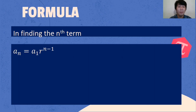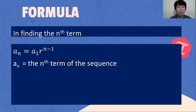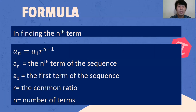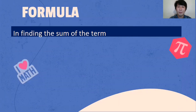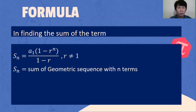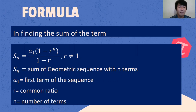Formulas to be used: for finding the nth term, a sub n is equal to a sub 1 multiplied by r raised to n minus 1. For finding the sum, S sub n is equal to a sub 1 multiplied by the quantity of 1 minus r raised to n, over 1 minus r, where r is not equal to 1. Where a sub n is the nth term, a sub 1 is the first term, r is the common ratio, and n is the number of terms.